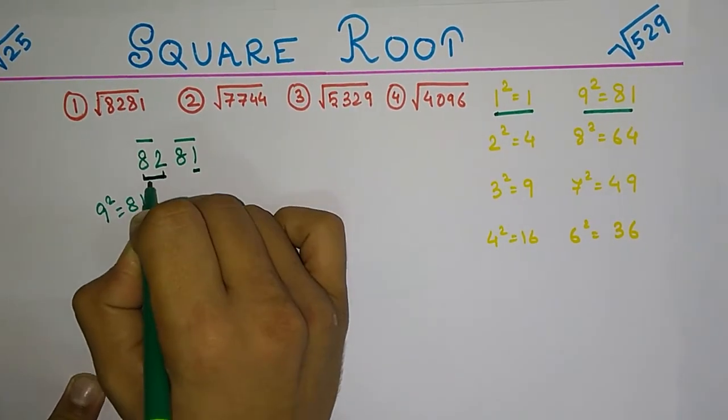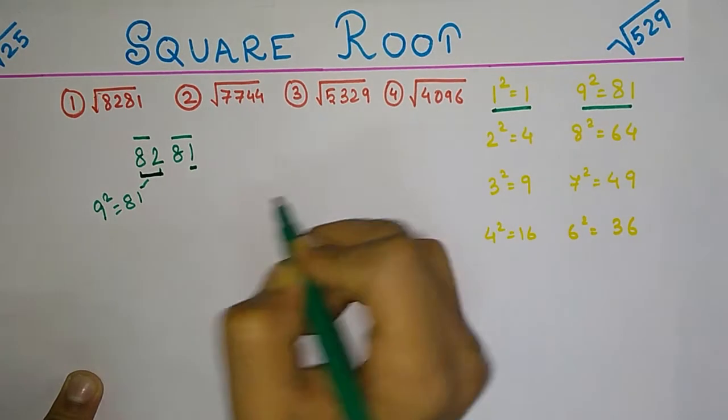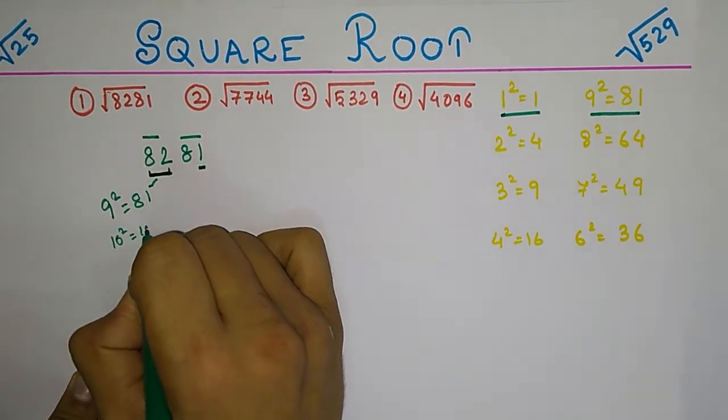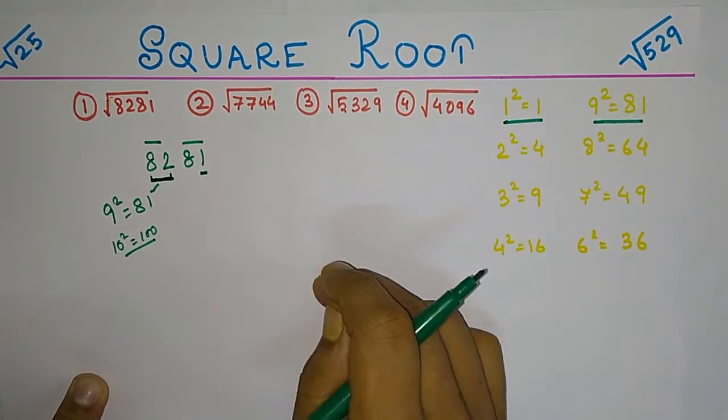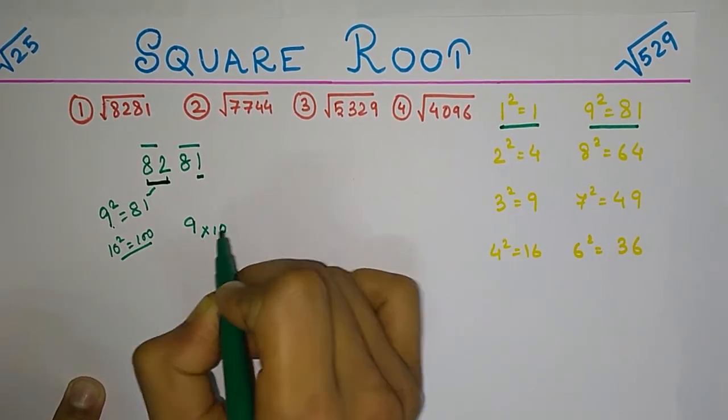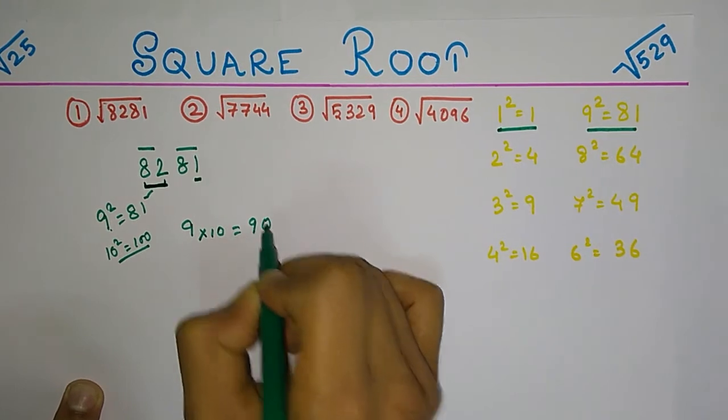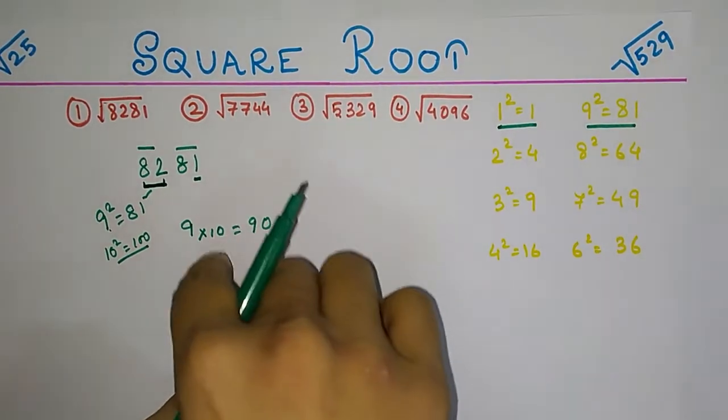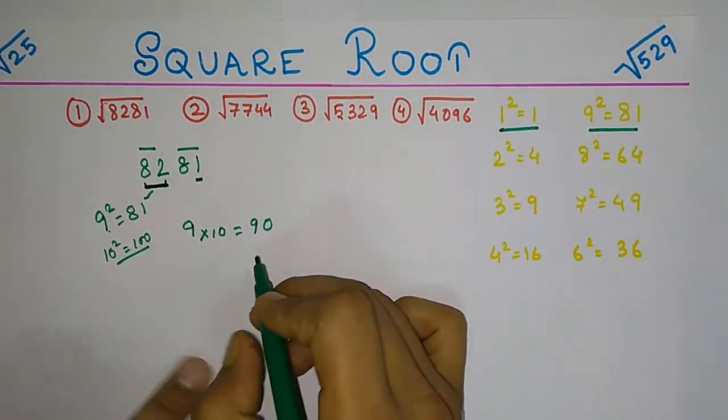Multiply 9 by the next number, that is 10, which gives us 90. Now compare this value with 82. Since 82 is less than 90, and we have 1 or 9 as options for the rightmost digit,